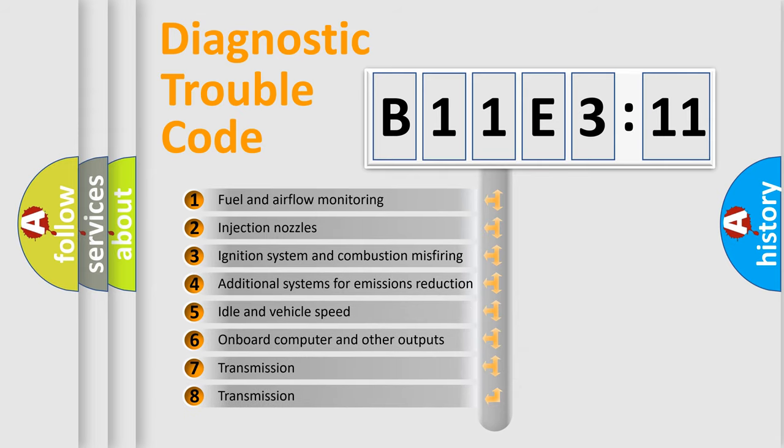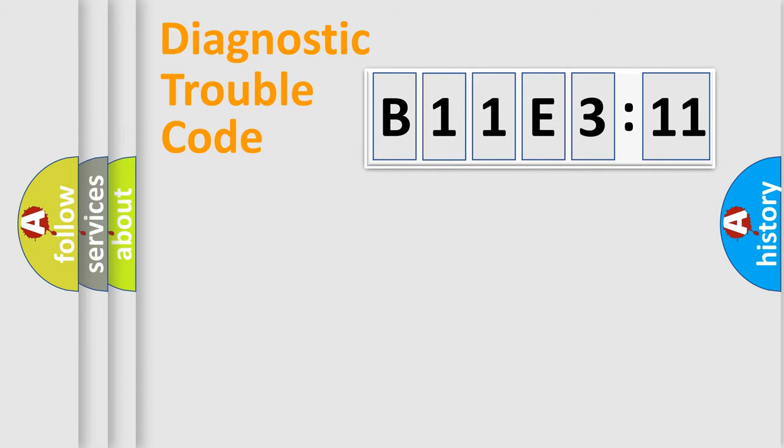The third character specifies a subset of errors. The distribution shown is valid only for the standardized DTC code. Only the last two characters define the specific fault of the group.